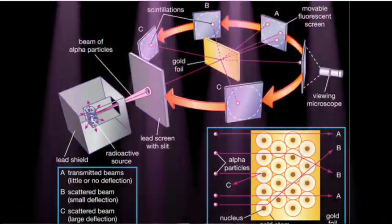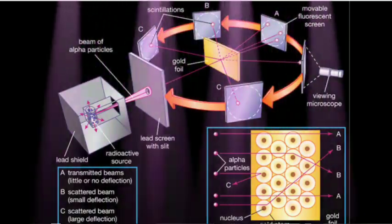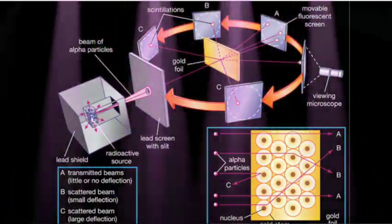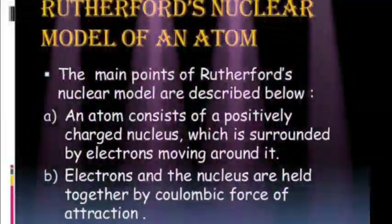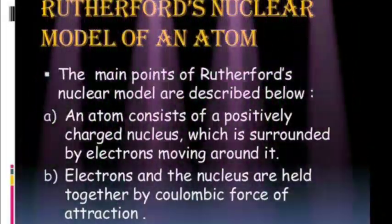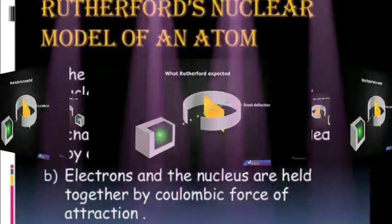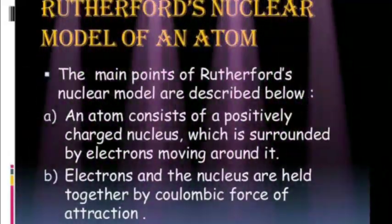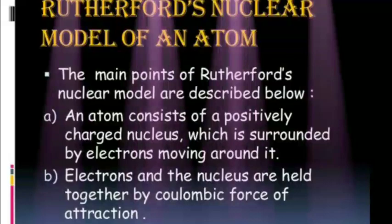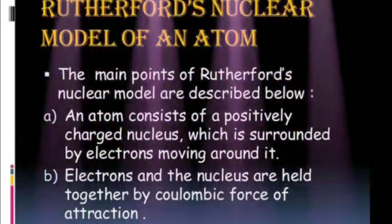The large number of alpha particles that went straight through the foil indicates that there was no obstacle in their path. It means that there must be mainly an empty space inside the atoms in the solid gold foil. The small number of alpha particles that got deflected through a small or a big angle must have faced an obstacle in their path. It means that the positively charged and heavy part causing obstruction would be at the centre of the atom.